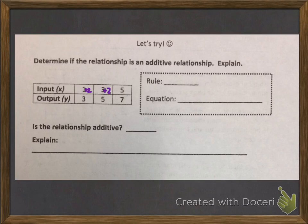If I add 2 to this 3, I get 5. 3 plus 2 equals 5. And if I add 2 to that 5, I get 7. So every time I'm adding 2 to the input to equal the output. Therefore, my rule is x plus 2, and my equation is y equals x plus 2.